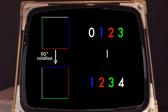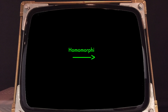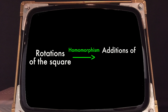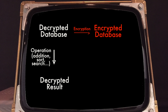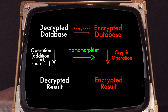Homomorphic encryption makes it possible to compute addition and multiplication on encrypted data, so that we can do any calculation. The idea is based on exploiting mathematical concepts invented over a hundred years ago — mathematicians explored the similarities between mathematical structures. For instance, a square shares similarities with numbers up to four, in the sense that performing a 90-degree rotation of the square is similar to adding one to numbers up to four, with the convention that four equals zero. This means rotations of the square can be performed by only manipulating numbers — we say there is a homomorphism that transforms rotations of the square into operations on numbers up to four.